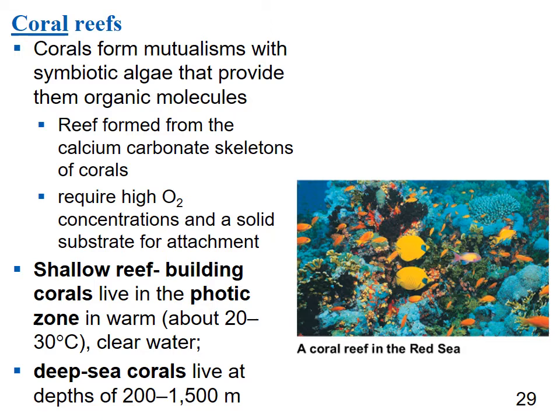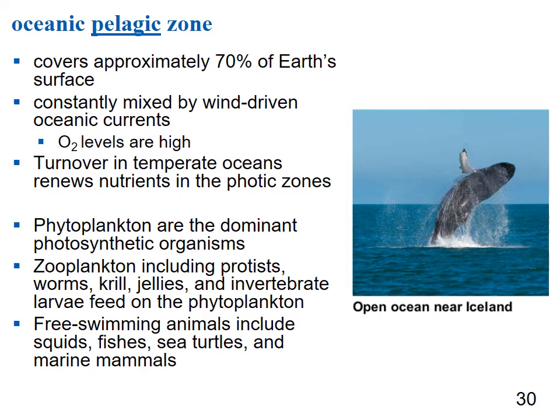The pelagic zone covers approximately 70% of the Earth's surface and tends to be high in oxygen because water is constantly mixed by wind-driven oceanic currents. Turnover in temperate oceans renews nutrients in the photic zone. Phytoplankton are the dominant photosynthetic organisms; zooplankton — including protists, worms, krill, jellies, and invertebrate larvae — feed on the phytoplankton. Free-swimming animals include squid, fishes, sea turtles, and other marine mammals.